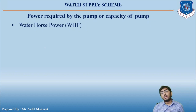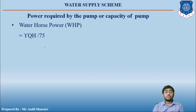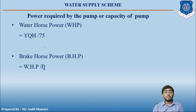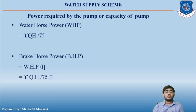The formula for water horsepower (WHP) is: WHP = γQH/75. If you need to find the brake horsepower (BHP), that equals water horsepower divided by efficiency: BHP = γQH/(75η).